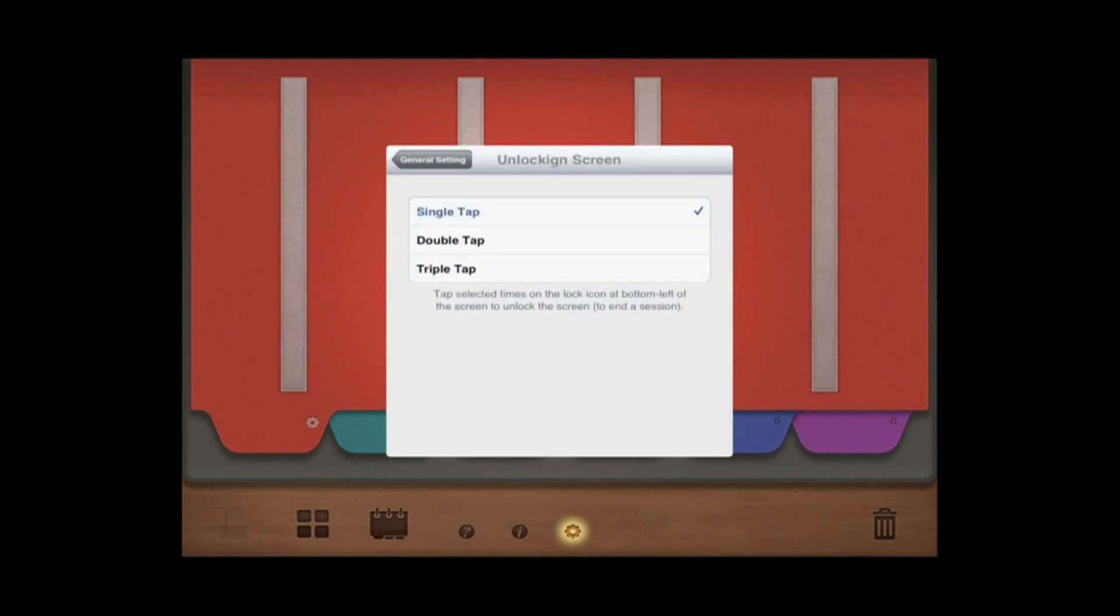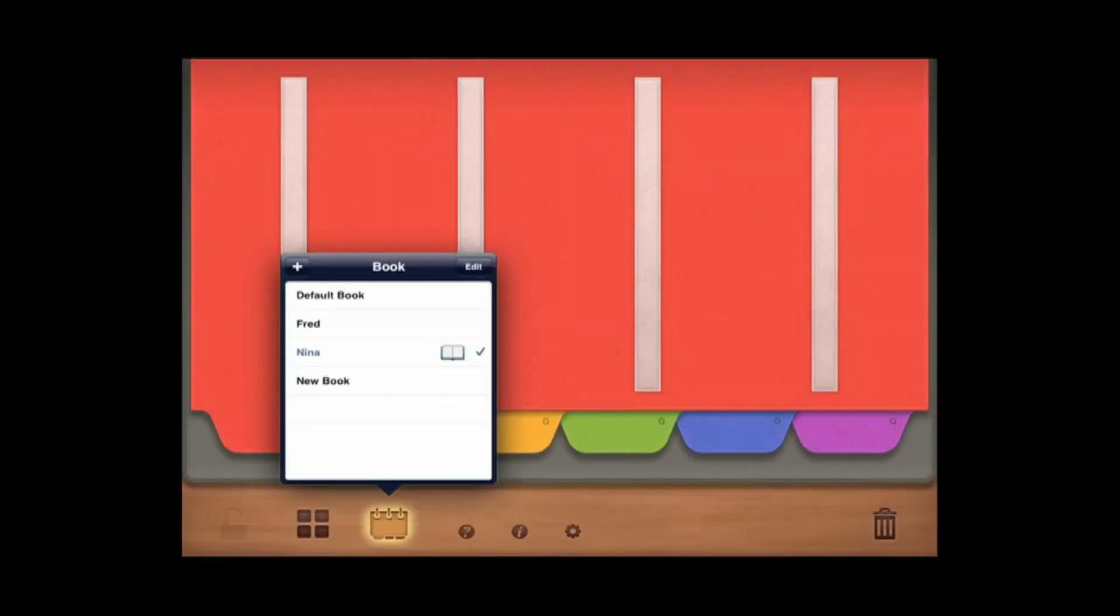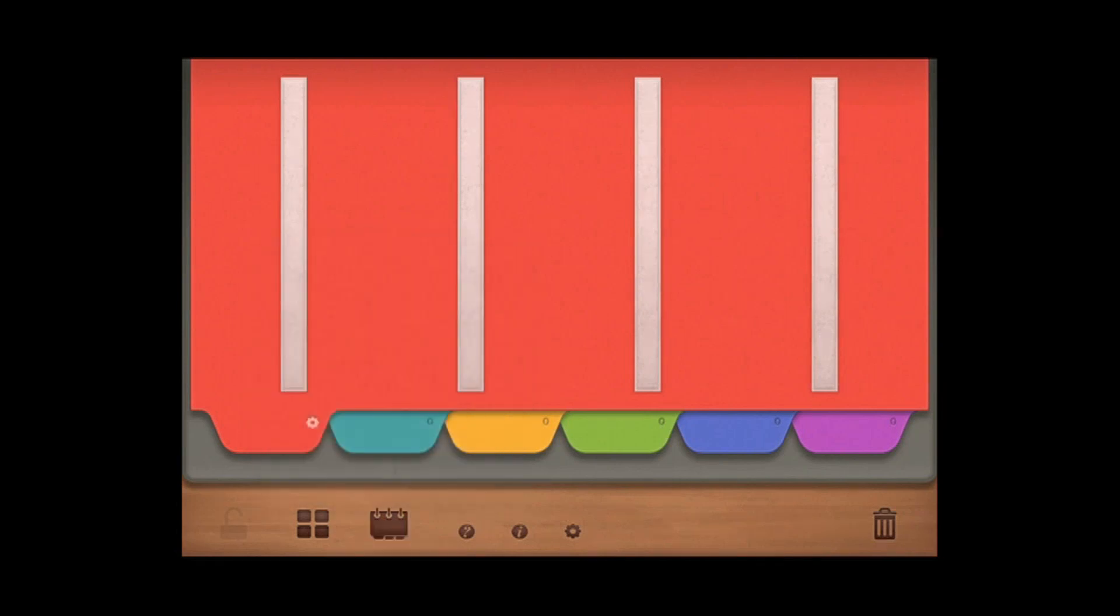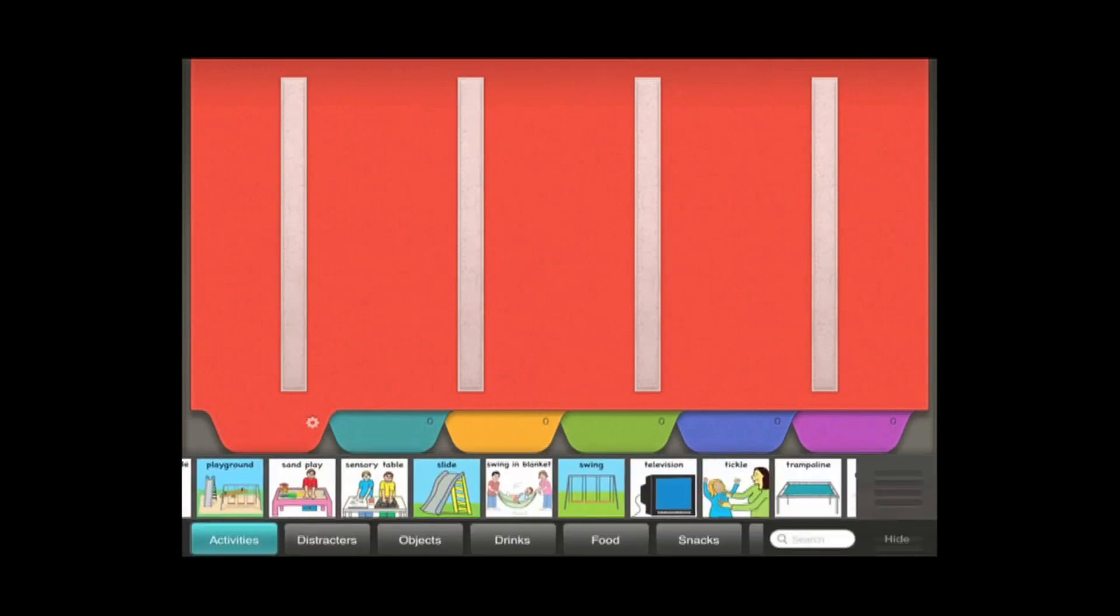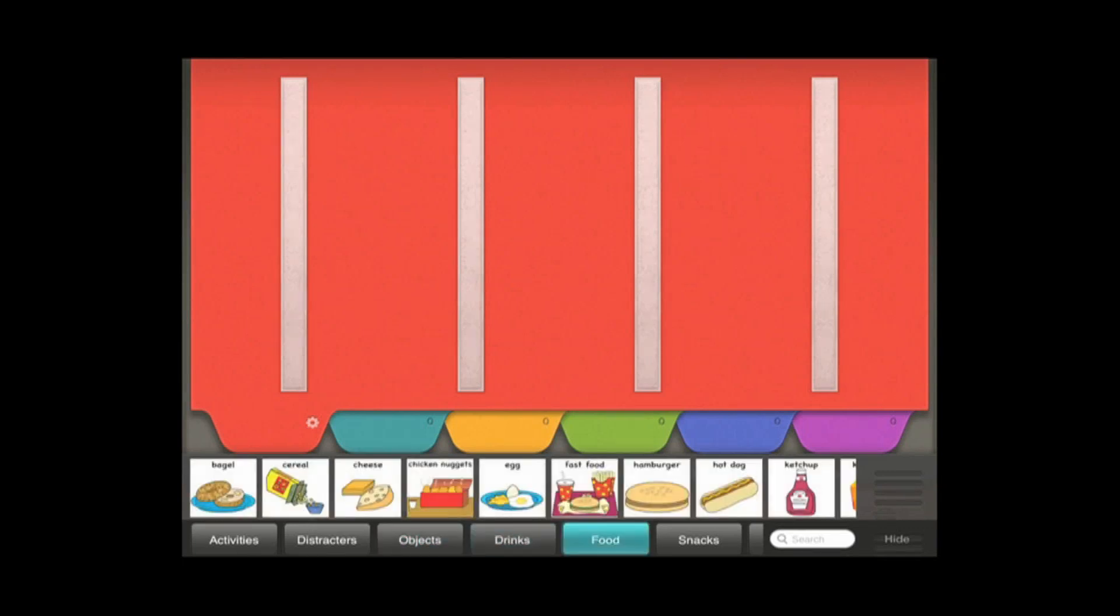The app allows you to create books for multiple students so that you can customize each book depending on your learner's specific needs. The first step to customizing a book is selecting the appropriate images from the picture library. You can choose from our set of 150 PICS for PECS images organized by categories, or you can select from your personal library.